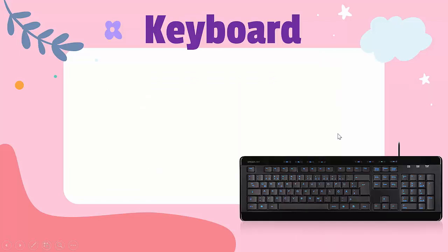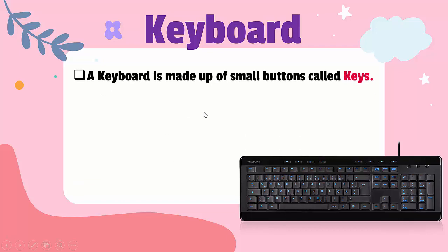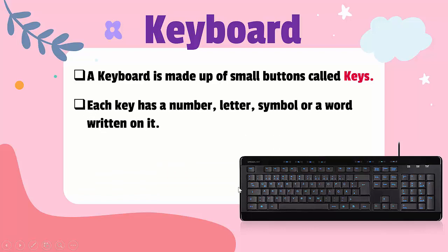Now the next part is the keyboard. Here you can see this is a keyboard on which there are different keys. A keyboard is made up of small buttons called keys. Now each key has a number, letter, symbol, or a word written on it. There are alphabet keys, number keys, and also symbols on it.